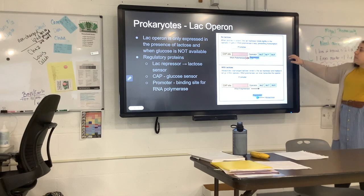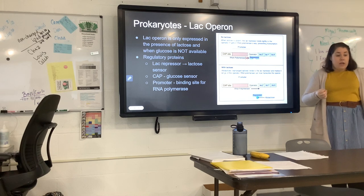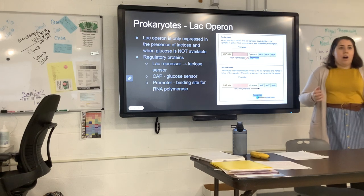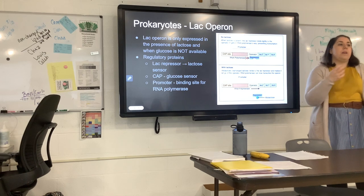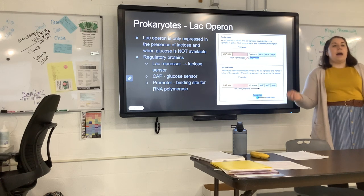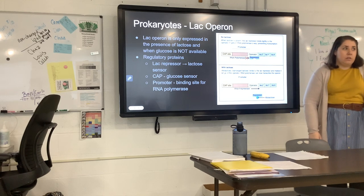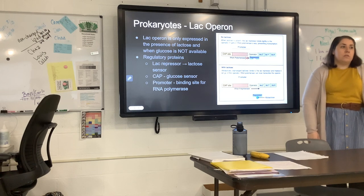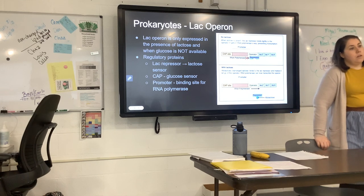When lactose is no longer present — because these proteins have broken down the lactose — allolactose will no longer be attached to the repressor and the repressor will reattach to the operator. These genes are only made in the presence of lactose. Scientists did this by growing bacteria on lactose-rich agars, where bacteria only had lactose as the food source, so they had to uptake lactose and convert it into glucose to complete fermentation for ATP. Lactose is just another type of carbohydrate — all carbohydrates are sugar.